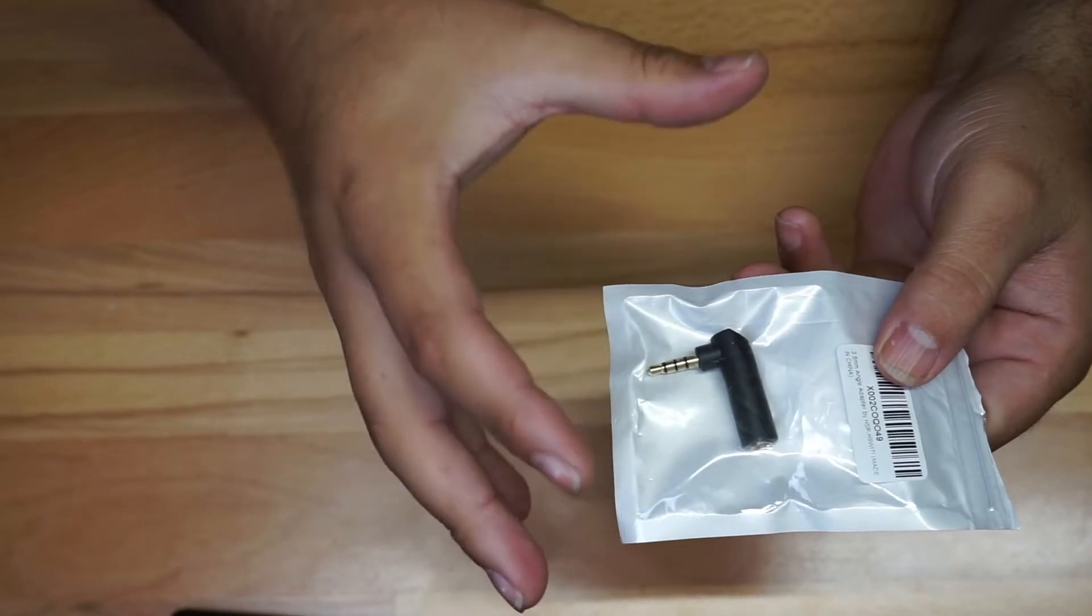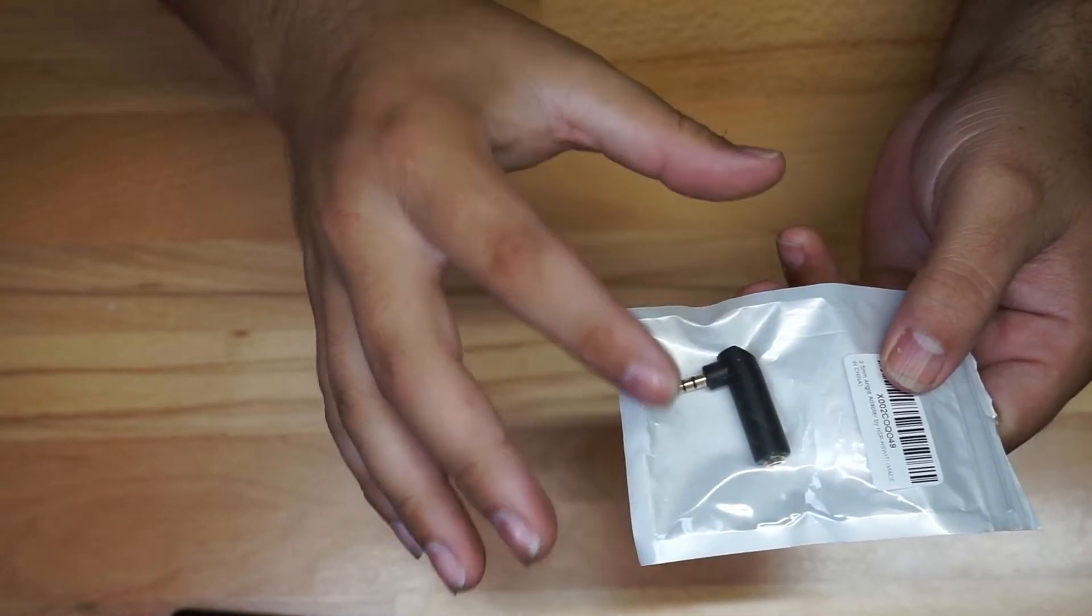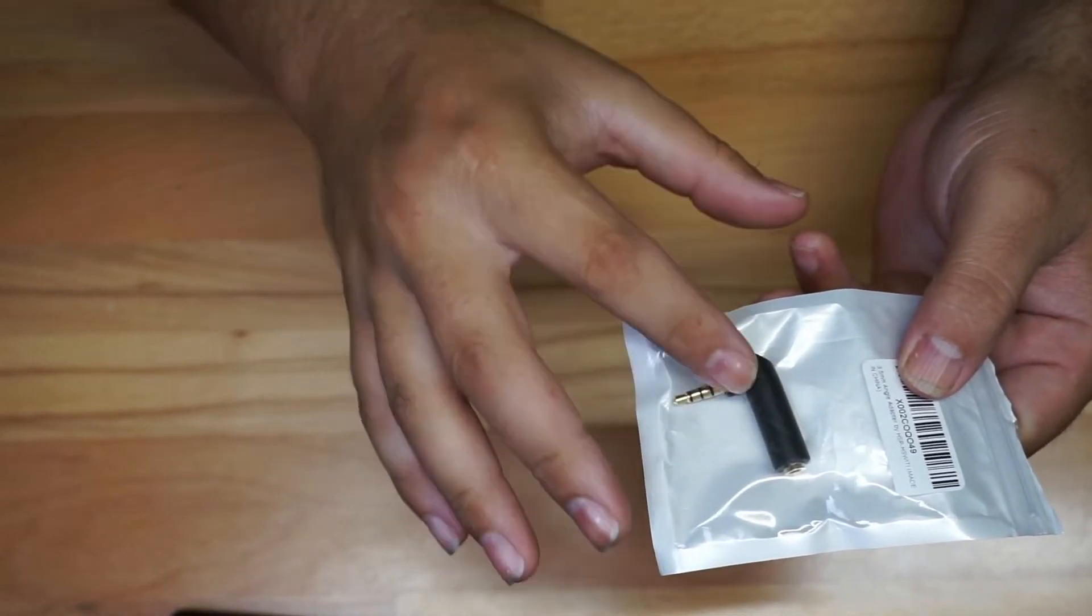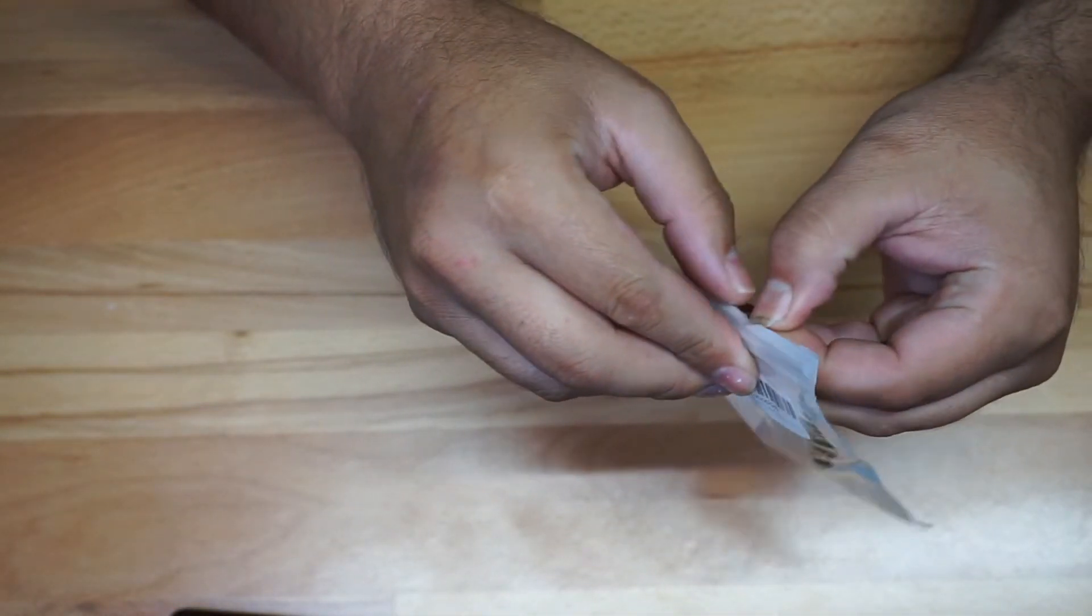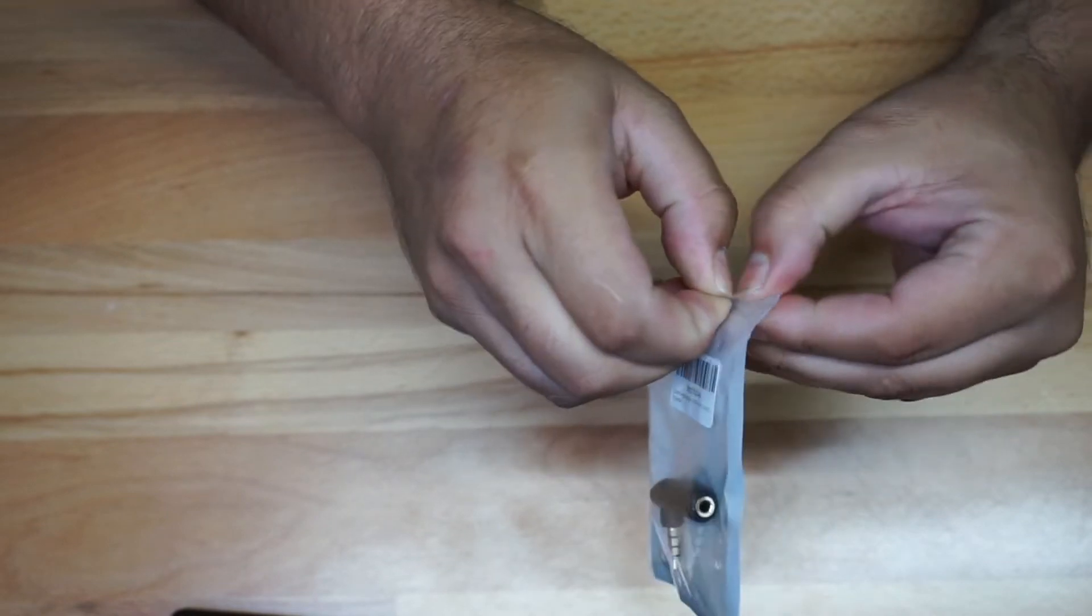They come in a pack of two, and this is a 3.5mm angle male to female adapter, 90 degrees. This is really beneficial because the 90-degree elbow allows you to put this in places that most likely don't have the best position, like in your computer or GoPro.